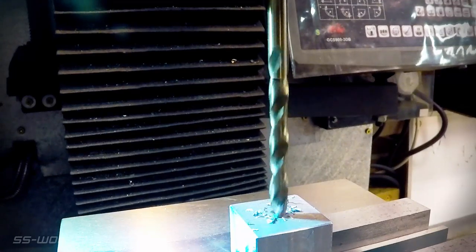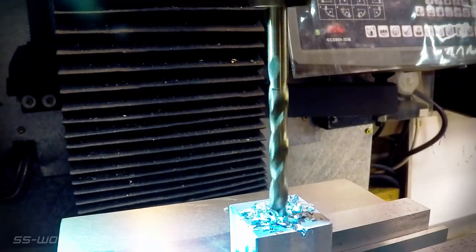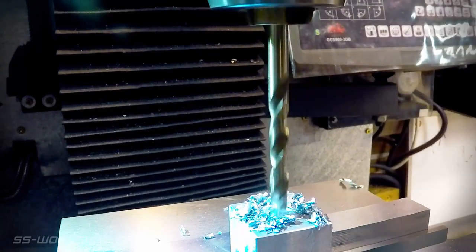You can then drill the hole for the tap, once again starting with the pilot hole followed by an 8.5mm drill for an M10 thread.